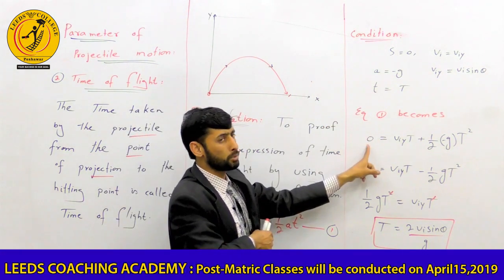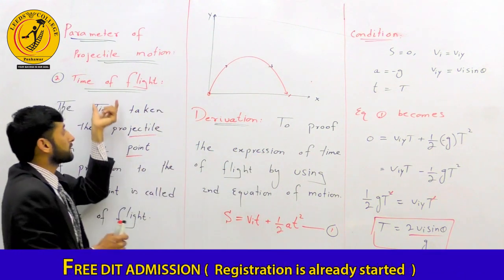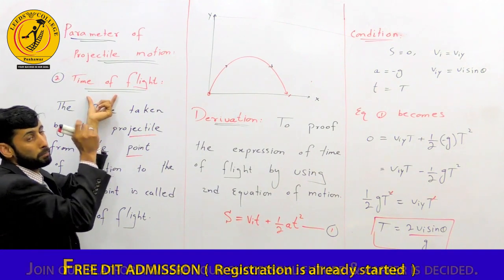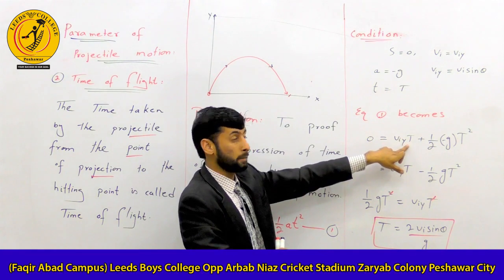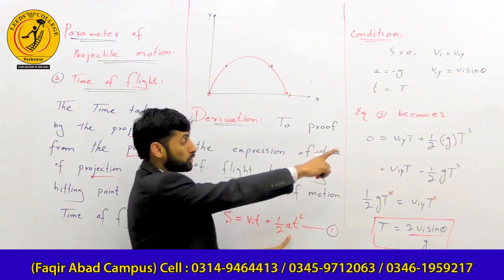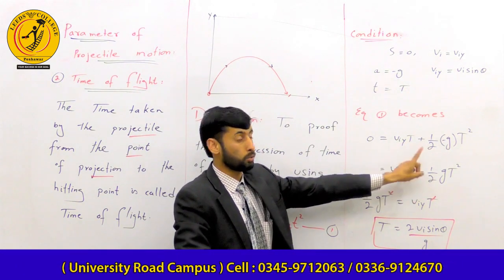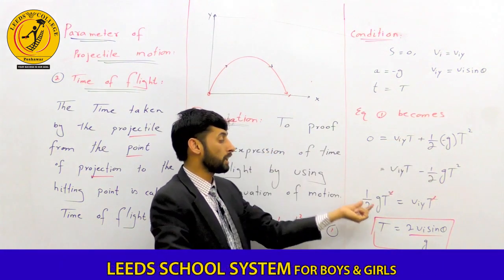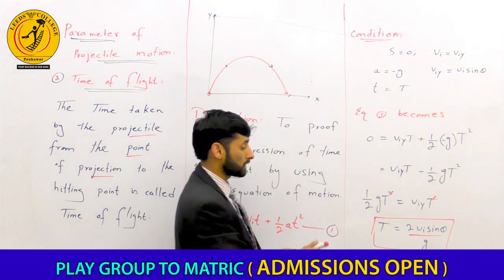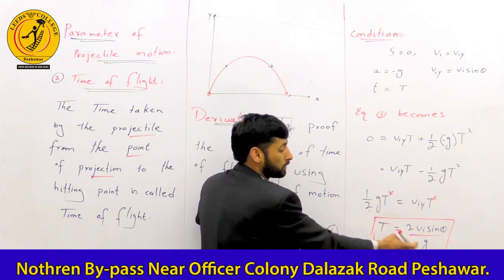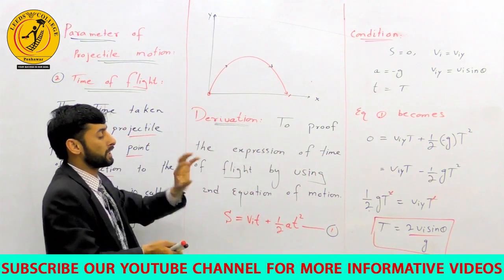Applying the second equation of motion with h equal to zero: 0 = viy·t − ½g·t². Solving this, we get t = 0 or t = 2viy/g. Since viy = vi·sinθ, the time of flight equation becomes T = 2·vi·sinθ / g.